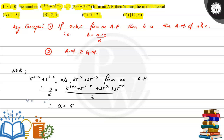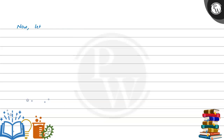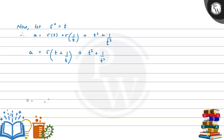So a equals 5 raised to (1 plus x) plus 5 raised to (1 minus x) plus 25 raised to x plus 25 raised to minus x. Now we let 5 raised to x equal t. Therefore a equals 5t plus 5 divided by t plus t squared plus 1 divided by t squared, which simplifies to 5 times (t plus 1 divided by t) plus (t squared plus 1 divided by t squared). Let's call this equation star.